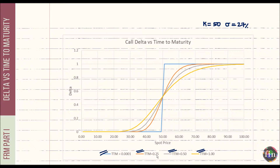Going back to our rule of thumb — for in-the-money options, delta decreases as time to maturity increases. Place yourself at a current spot of 60: as you increase the time to maturity moving from blue to orange to gray to yellow curve, the delta is going down. Similarly, at a spot price of 40 (out of the money), as time to maturity increases the delta increases — confirming what we found intuitively.